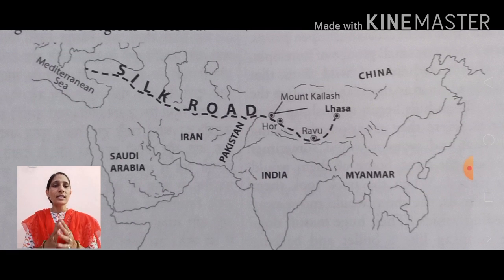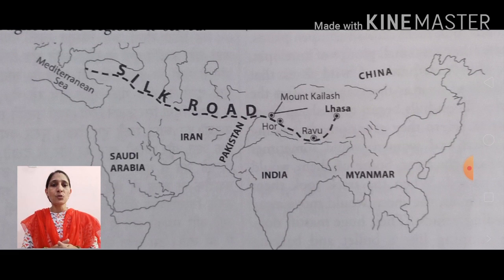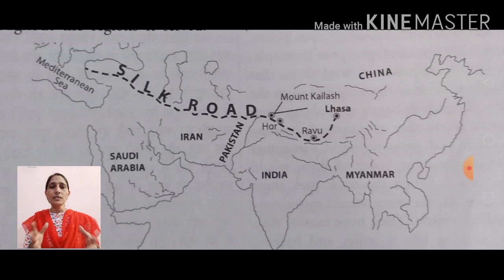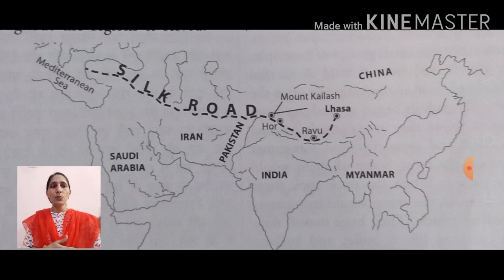जिसके प्रयोग किया जाता था बैलगाड़ी और घोड़ागाड़ियों के लिए, जो कि मुख्य तौर पर व्यापारिक purpose के लिए इसका use होता था। और यहाँ से महँगी-महँगी चीज़ें आती-जाती थीं। इसे सिल्क रूट के नाम से जाना जाता था। और इसी के ऊपर इस chapter की story लिखी गई है।